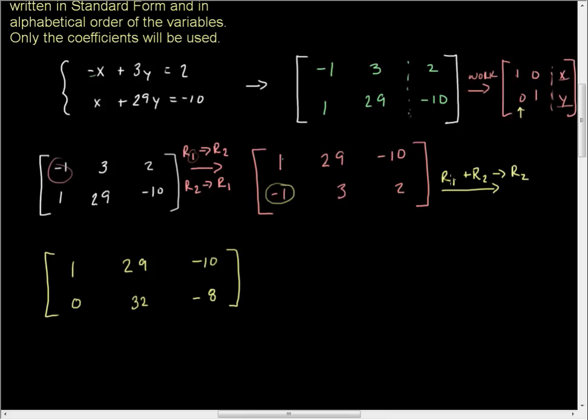I have my result. I simply added row 1 to row 2, and I put the result back in row 2. I wanted a 0 here in this lead spot for the second row. At this point, I have a 1 here. I need a 1 right here. I'm going to divide or multiply through by 1/32.